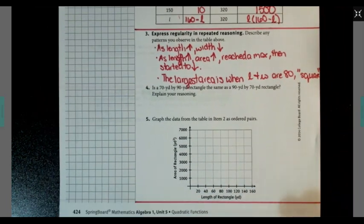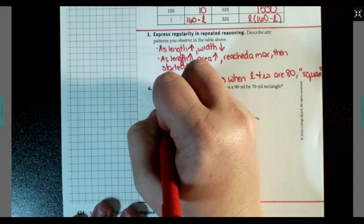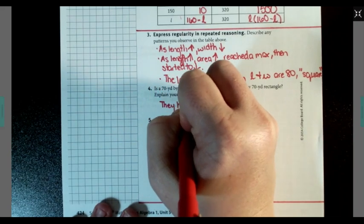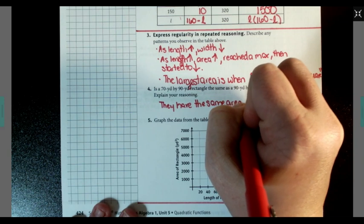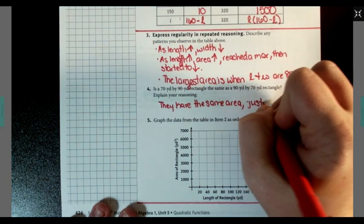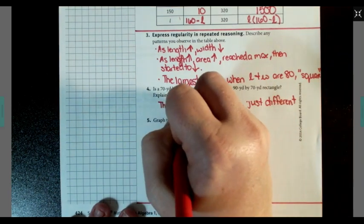Number four. Is a 70 yard by 90 yard rectangle the same as a 90 yard by 70 yard rectangle? Explain your reasoning. Well, they have the same area, just different orientations.